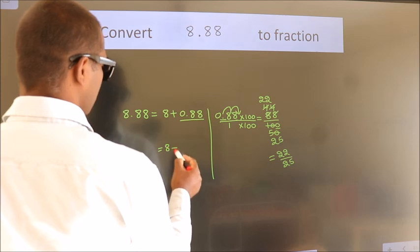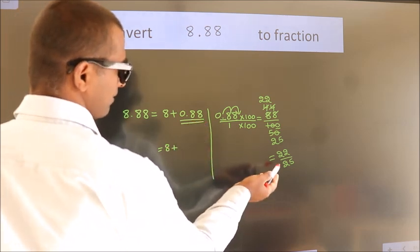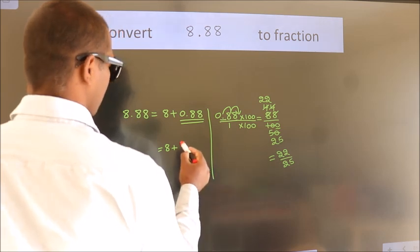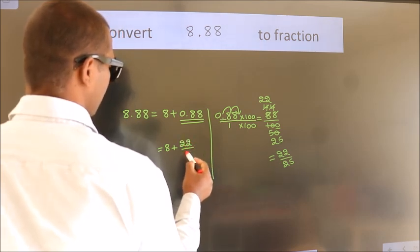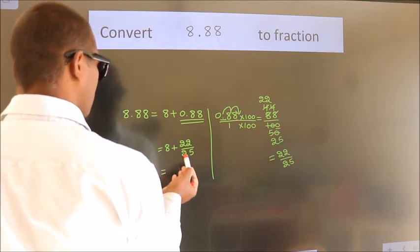So 8 plus in place of 0.88, now we write this fraction: 22 by 25. 8 plus 22 by 25.